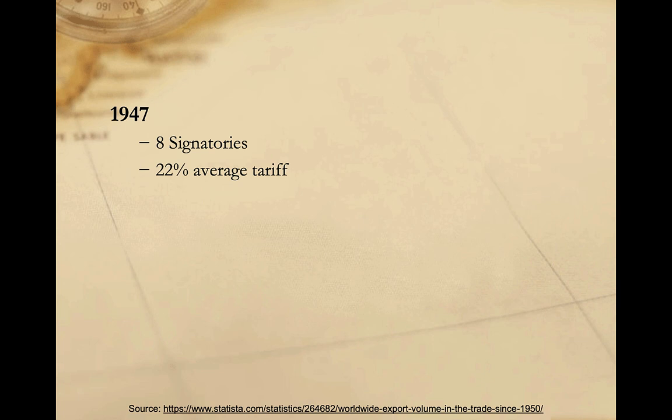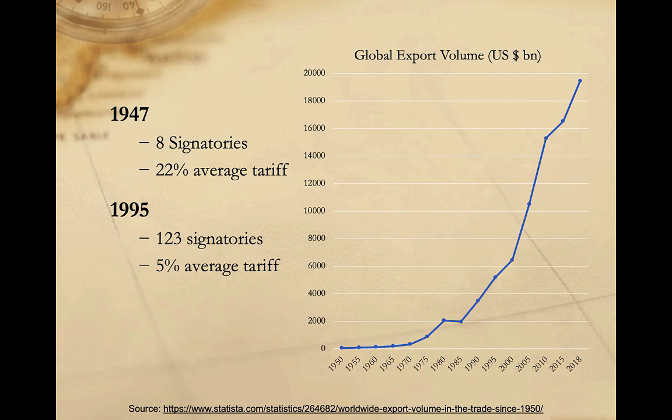The GATT proved to be a dramatic success in reducing tariffs. At the start of the GATT in 1947, the average tariff rate amongst its signatories was 22 percent. By the time the Uruguay Round concluded in 1994, the average tariff rate was just 5 percent. Further, the number of signatories had increased from just 8 to 123, representing more than 80 percent of global trade. GATT increased transparency in international trade rules and helped to rationalize trade barriers. Over time, the total value of international trade skyrocketed from about 60 billion dollars when the GATT was founded, to about 5.1 trillion dollars when it transitioned into the WTO in 1995, and on to nearly 20 trillion dollars today.